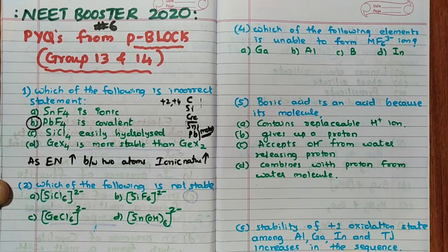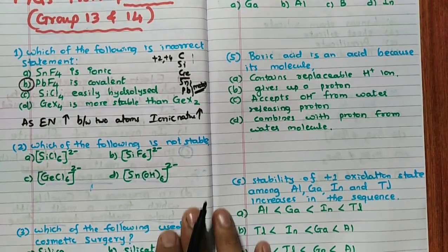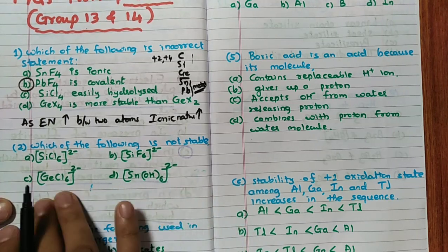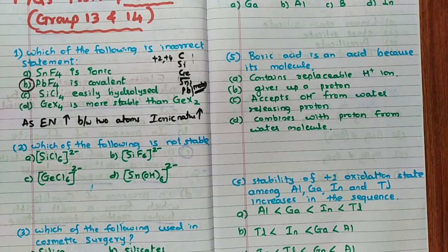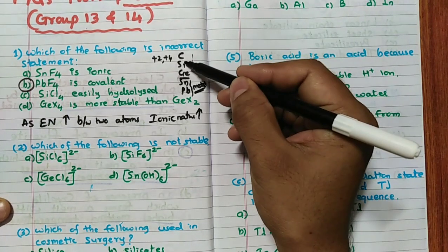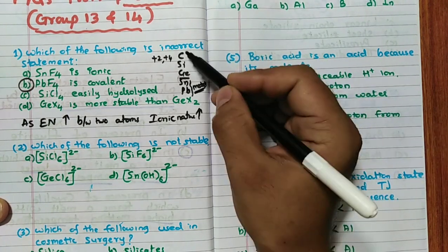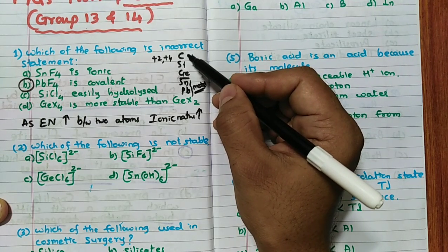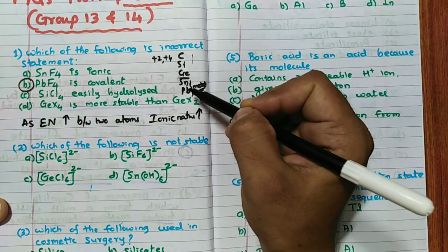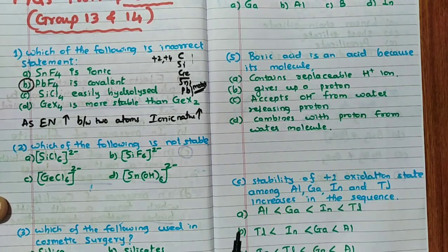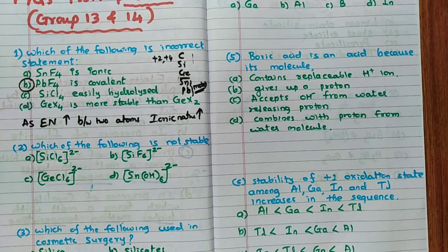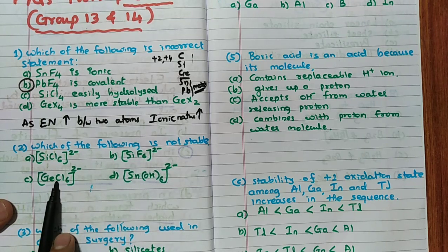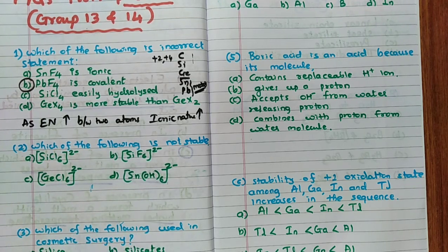The second question asks which of the following is not stable. First, check whether six bonds are possible. Carbon cannot form more than four bonds due to the absence of d-orbitals. But silicon, germanium, tin, and lead can form up to six bonds, so SiF6²⁻, SiCl6²⁻, GeCl6²⁻, and SnCl6²⁻ are all possible in terms of maximum covalency.